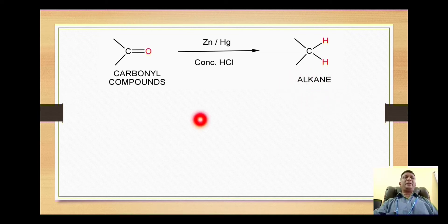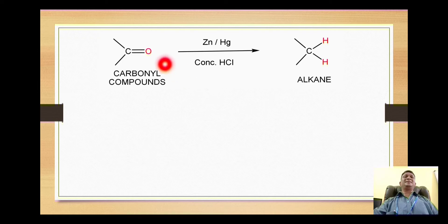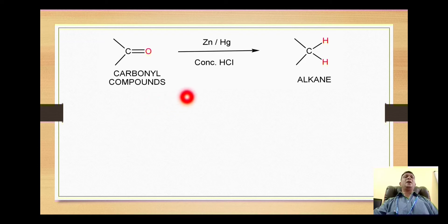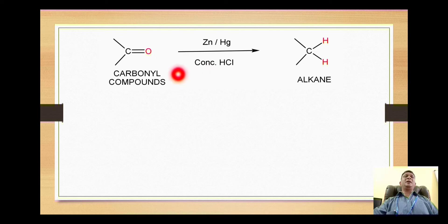This reaction is chiefly used for those carbonyl compounds which are acid resistant. Please keep this point in mind: Clemmensen reduction is used for reduction of those carbonyl compounds which are acid resistant — that means which cannot be degraded in the presence of concentrated hydrochloric acid.